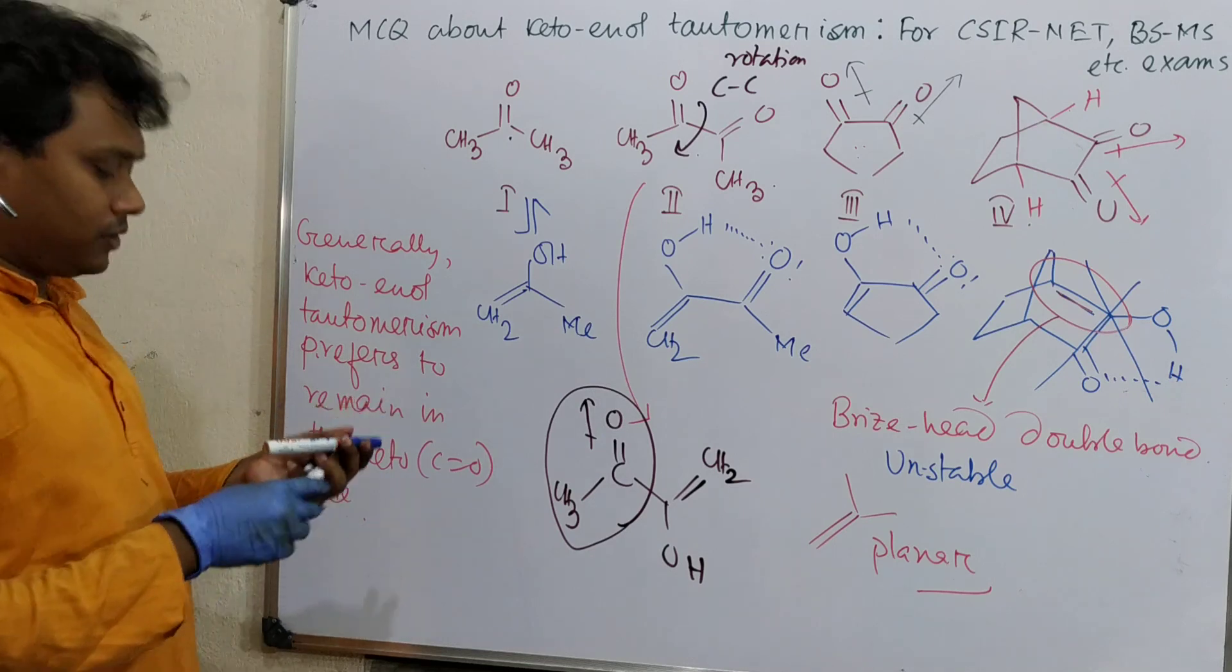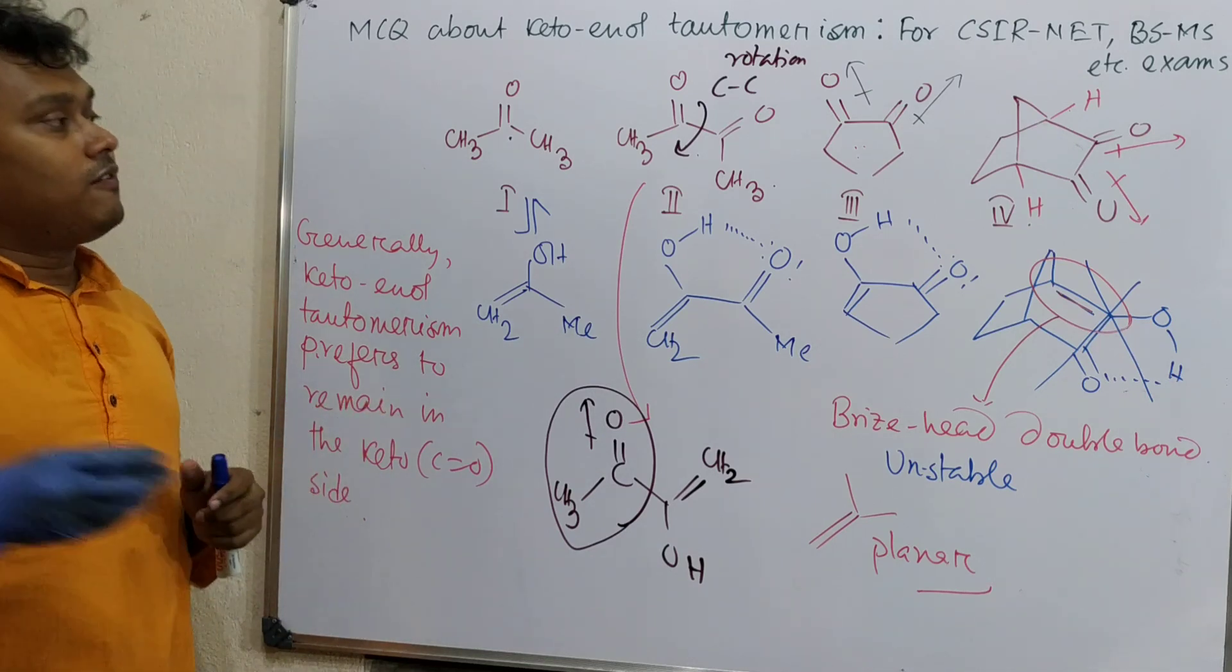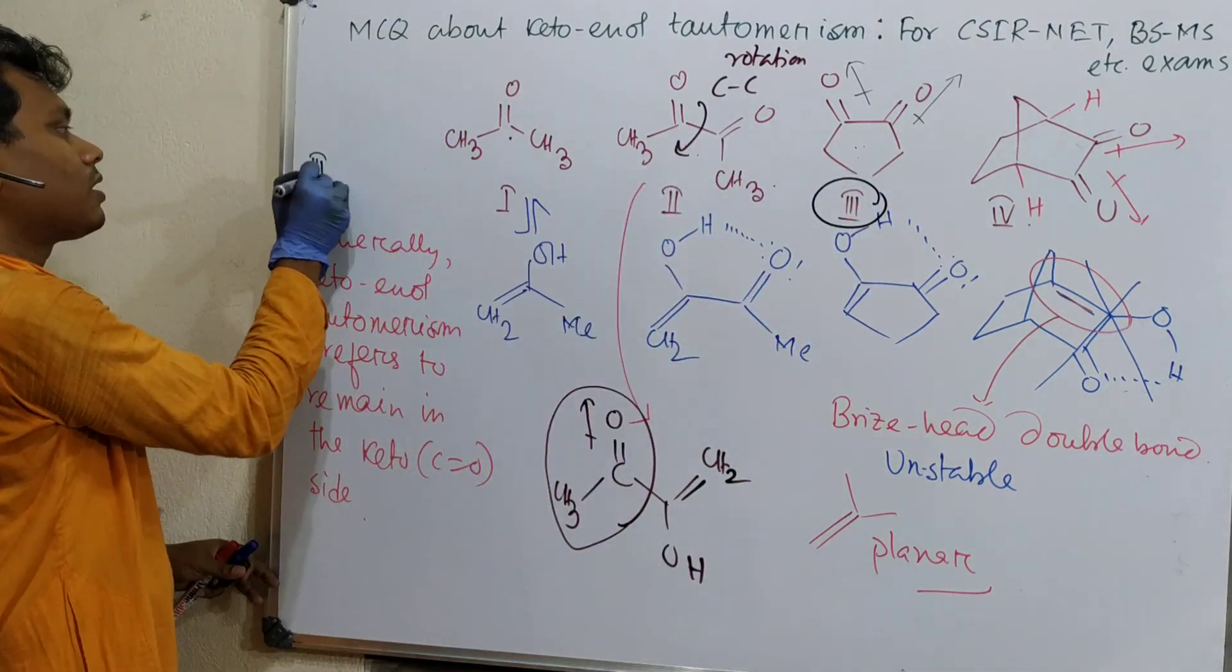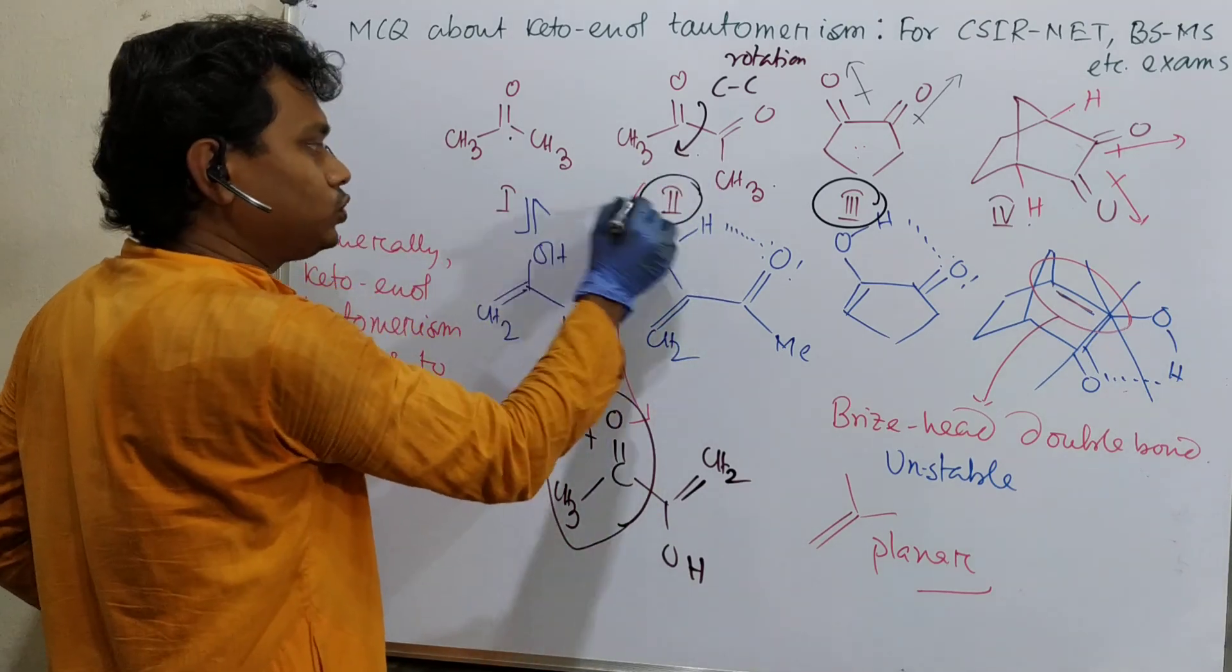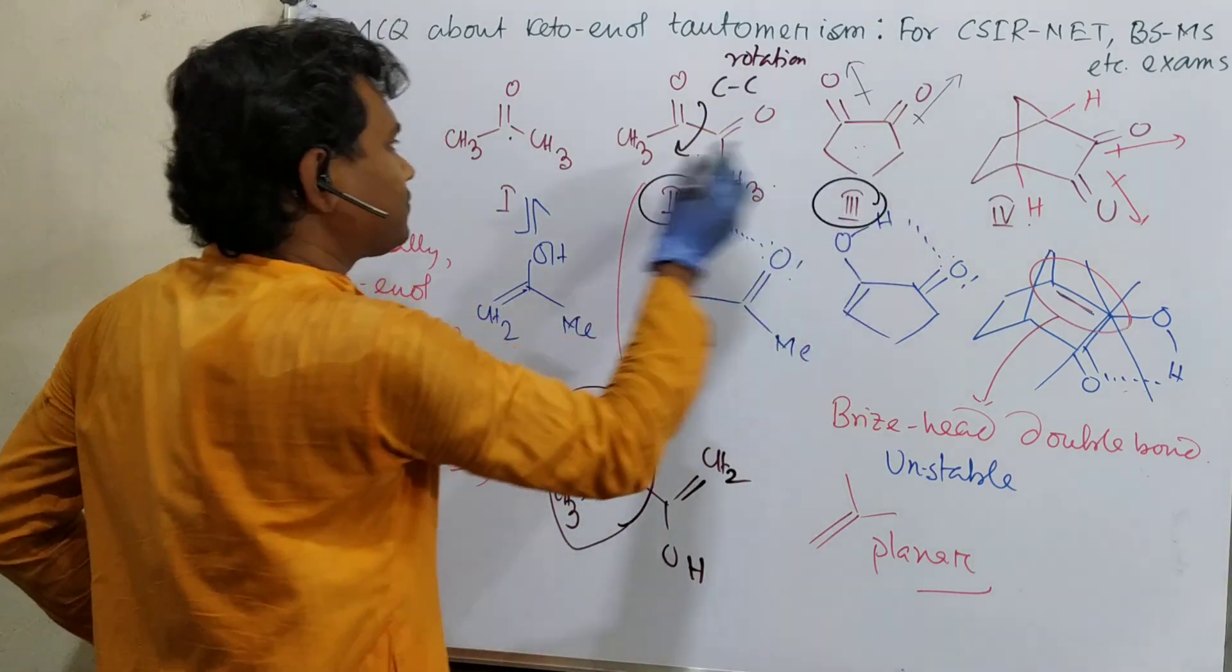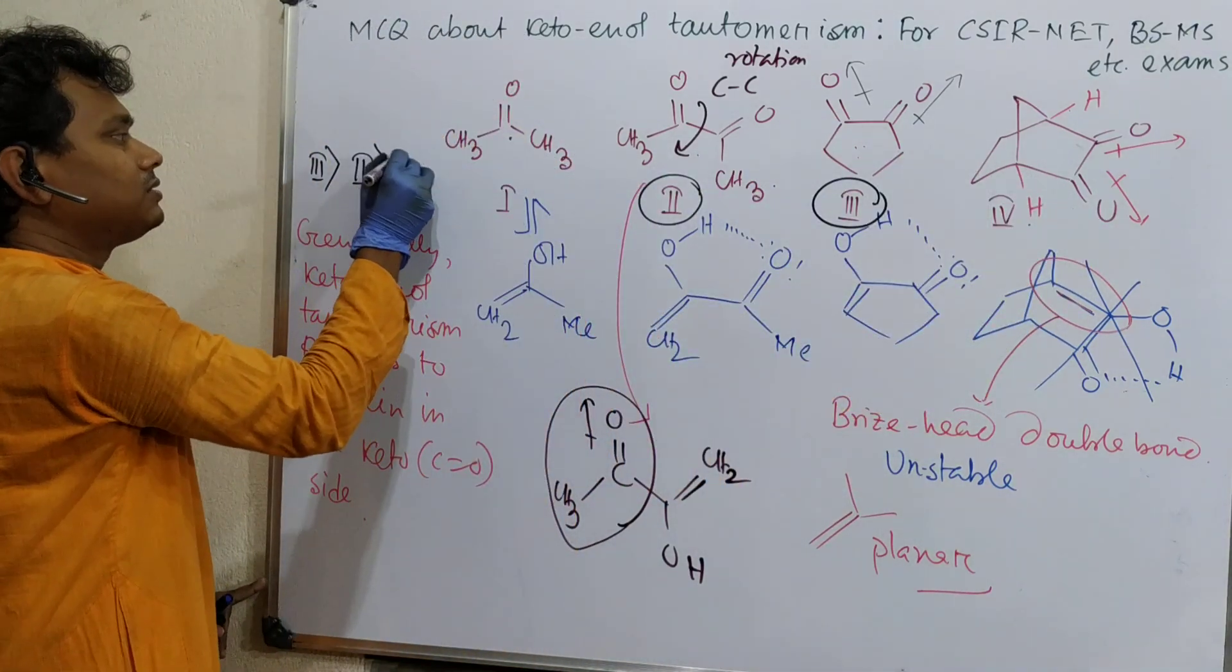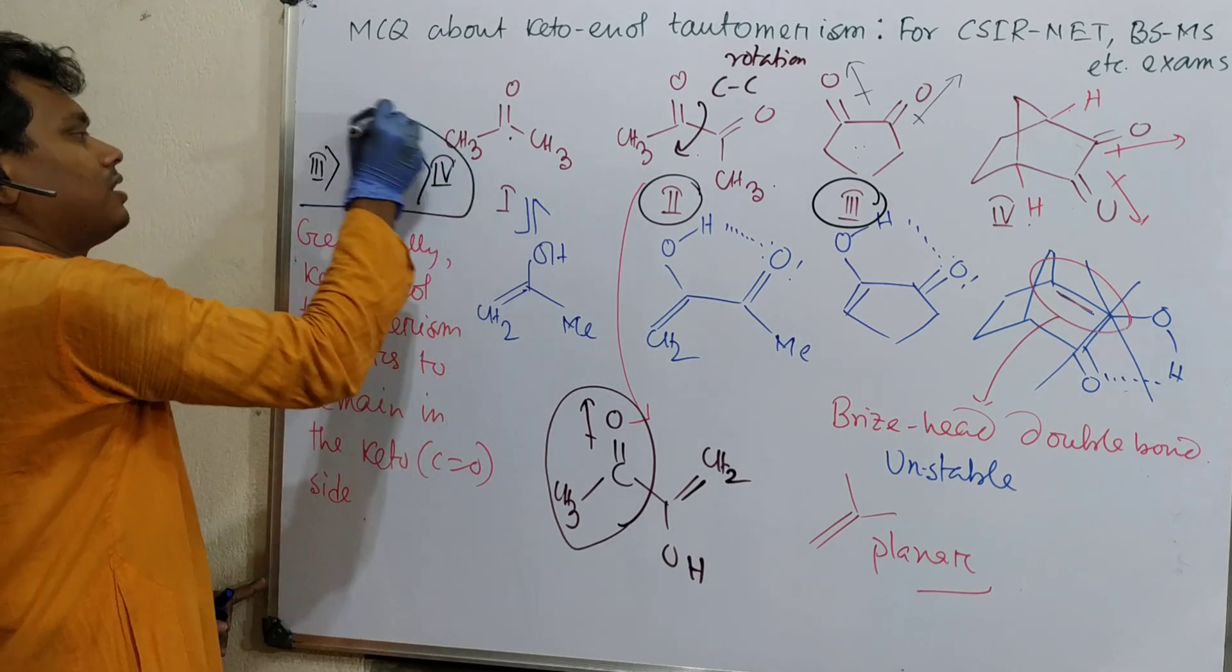So what is the answer for this question? First of all, maximum enol content is 3, then 2, then comparing acetone versus compound 4 - this is bridgehead, not possible, so acetone is better. So the answer is 3, 2, 1, 4.